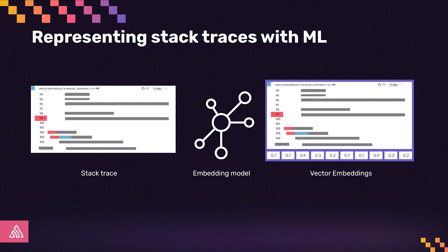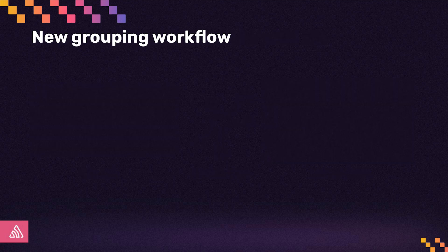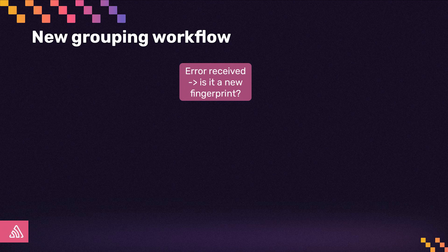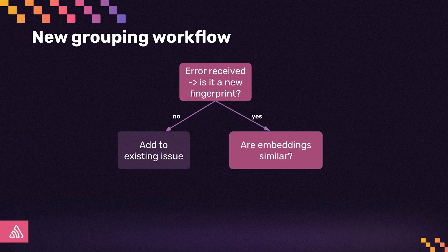We're using a powerful embeddings model to build a semantic representation of error stack traces. This representation enables us to efficiently compare errors and automatically identify instances where they should be grouped together. The start of our grouping flow won't change — for each new event you send us, we start by applying our fingerprint algorithm. If it's a new hash, our ML grouping algorithm steps in. It takes the embedding from the stack trace and identifies whether there's an existing issue that it's semantically identical to. If so, we simply merge them together.